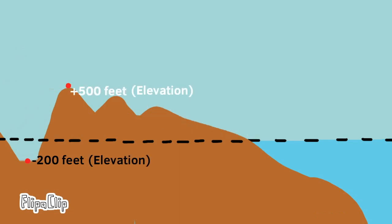The peak of this mountain or hill is 500 feet above sea level. That means the elevation is 500 feet. And the valley floor is 200 feet below sea level. That means its elevation is negative 200 feet.